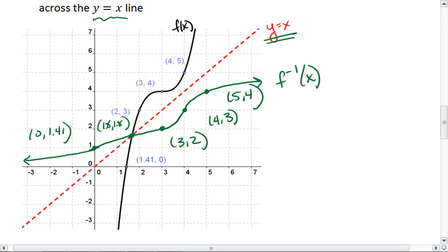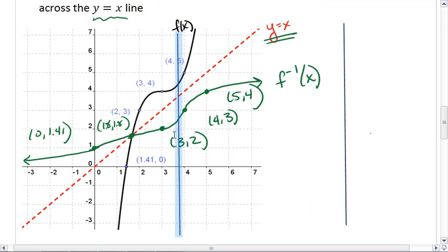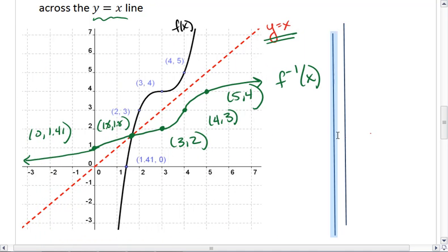This also means we can check to see whether it would actually have a function for the inverse. So looking at the black line, we already know that this is a function from the vertical line test. We can run this vertical line anywhere across the black function f of x, and it will only cross it once. We can also run it across the green function f inverse of x, and again, we also only cross it once. So our inverse is a function.